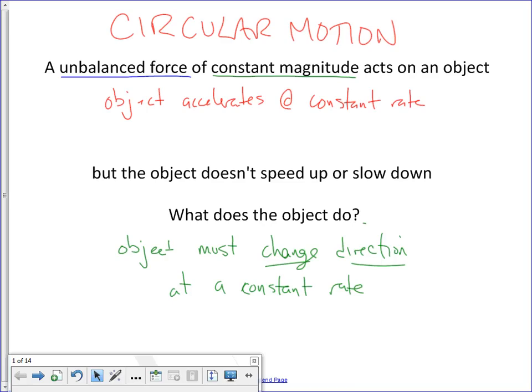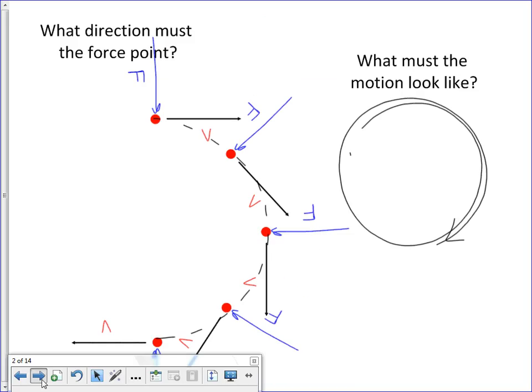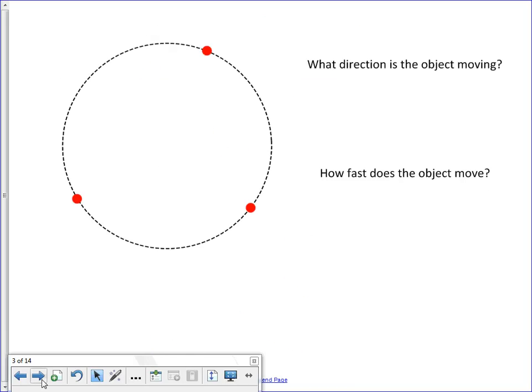And that works, again, if you go back to here and say, oh, yeah, change direction at a constant rate. Yep, that sounds like what would happen if you moved in a circle. Every second, your direction changes by X number of degrees. Okay? So, what we're talking about in this new investigation is circular motion.